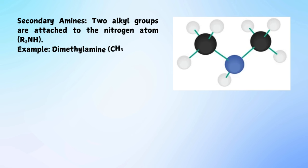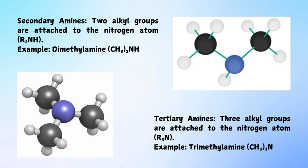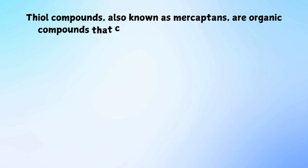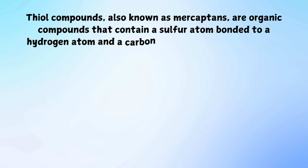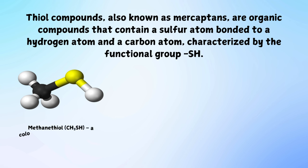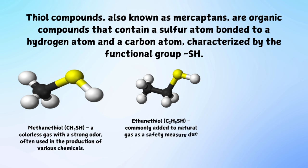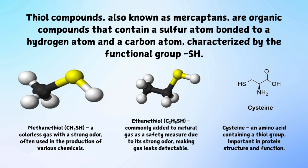Tertiary amines have three alkyl groups attached to the nitrogen atom (R3N), for example trimethylamine. Thio compounds, also known as mercaptans, are organic compounds that contain a sulfur atom bonded to a hydrogen atom and a carbon atom, characterized by the functional group -SH. Examples include methanethiol, used in the production of various chemicals; ethanethiol, commonly added to natural gas as a safety measure due to its strong odor, making gas leaks detectable; and cysteine, an amino acid containing a thiol group, important in protein structure and function.